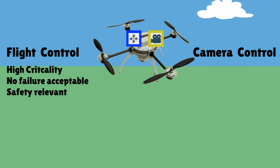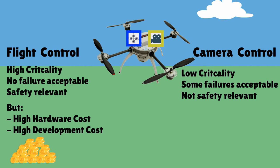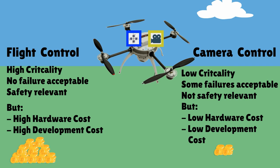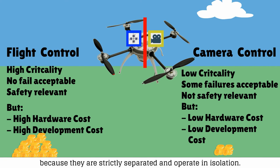We have the high criticality system — we cannot accept any failures here because it is safety relevant. But ensuring such high dependability is not for free; it comes with higher hardware costs and higher development costs. The camera control is less critical. Some failures are acceptable because it is not safety relevant. Hence, it requires less expensive hardware and less development effort. Having the two systems both in one quadcopter is possible because they are strictly separated and can operate in isolation.